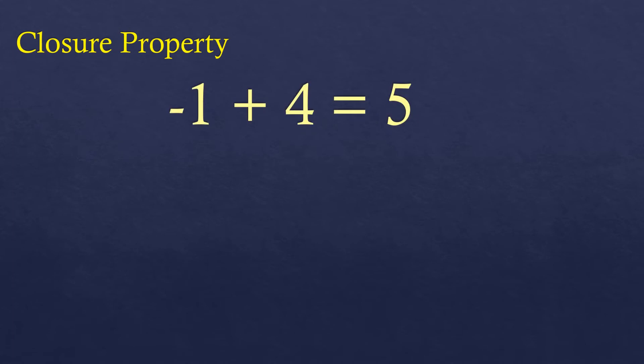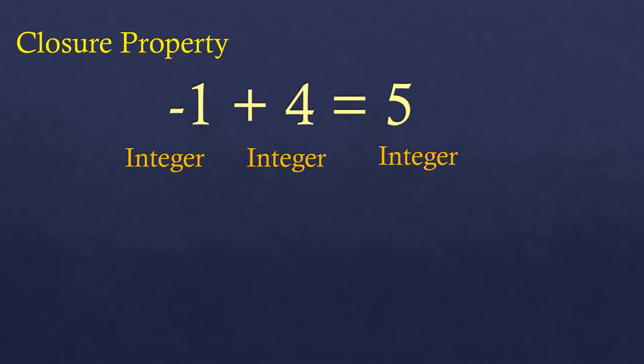Let me illustrate what closure property means for the operation on the set of integers. Let's say we have this mathematical expression: negative one plus four equals five. It's an integer as it involves signed numbers, which are also part of whole numbers with the opposite sign. Closure property means that when we add or operate two integers, the result is also an integer.